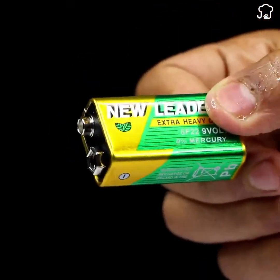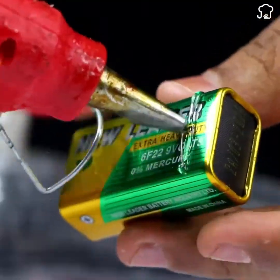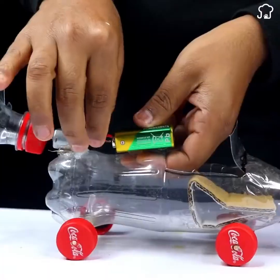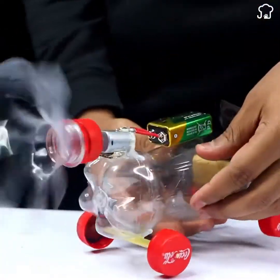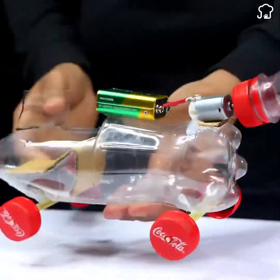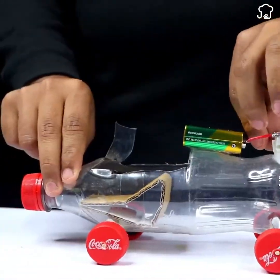As the final step, take a 9V square battery and stick it right next to the car's hole. Then, connect the electronic motor. And with that, our homemade electric toy car will be ready.